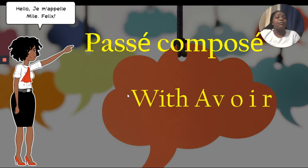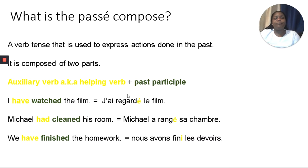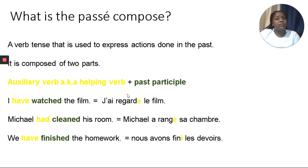So we're going to focus on the passé composé with avoir. Basically, the passé composé is a verb tense that is used to express actions that are done in the past. Like its name, composé, it is composed of two parts. The first part is called the auxiliary verb — most teachers use the term 'helping verb' — and the past participle. The auxiliary verb and the past participle help to form the passé composé in French.